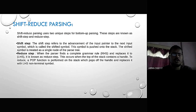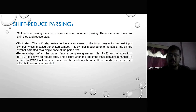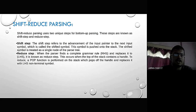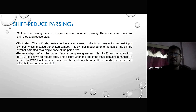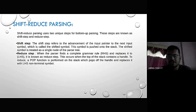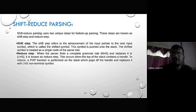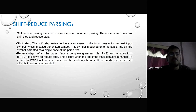Shift-reduce parsing uses two unique steps for bottom-up parsing. The shift step refers to the advancement of the input pointer to the next input symbol, called the shift symbol. The symbol is pushed onto the stack using the push function. The shift symbol is then treated as a single node of the parse tree.